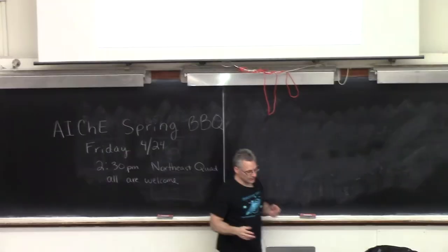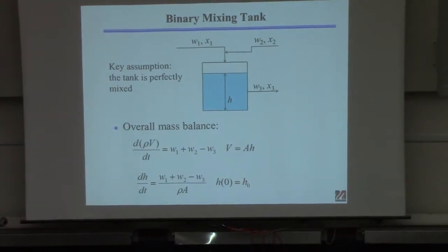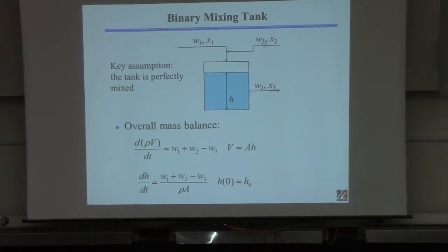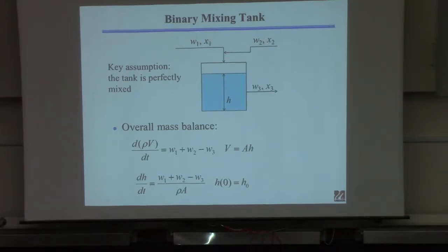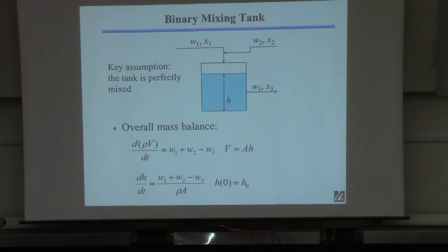I want to start with this example, which I started but then abandoned partway through because I knew I couldn't finish it. This is a case where you're just mixing two streams — a mass flow rate of the first stream, mass flow rate of the second stream. This is a binary system, so we have one mass fraction. These are mass flow rates, so we'll use mass fractions. This is the mass fraction of component A.